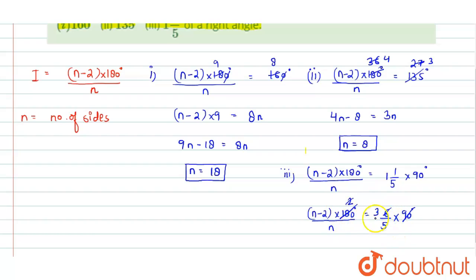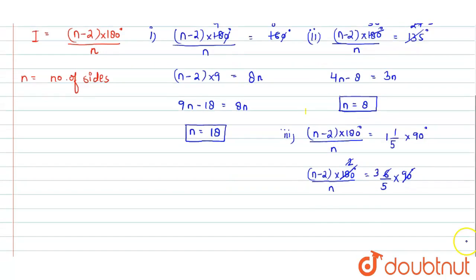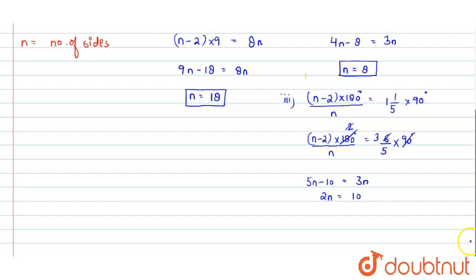Now cross multiply these values, we will get 5n minus 10 equals to 3n and from this we will get 2n equals to 10 and finally n is equal to 5. So these are the number of sides for the third part.